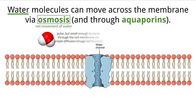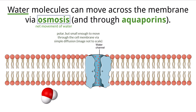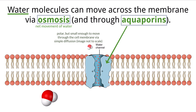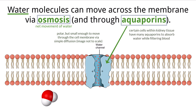Even though water molecules are polar, they are small enough to move through the cell membrane via simple diffusion. Some cells have additional structures called aquaporins — integral protein channels that allow water to move across the membrane at a faster rate. For example, some cells that make up your kidney tissue have large numbers of aquaporins to help absorb water faster when filtering your blood. The movement of water happens without energy through the process of diffusion.